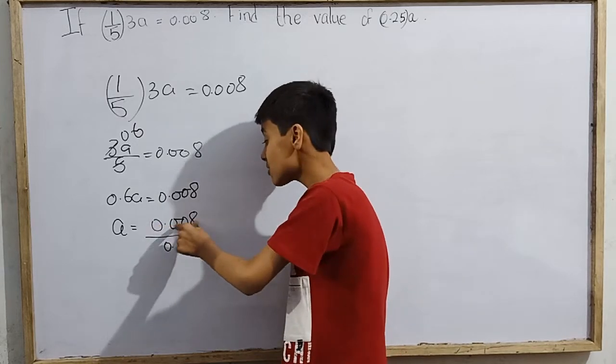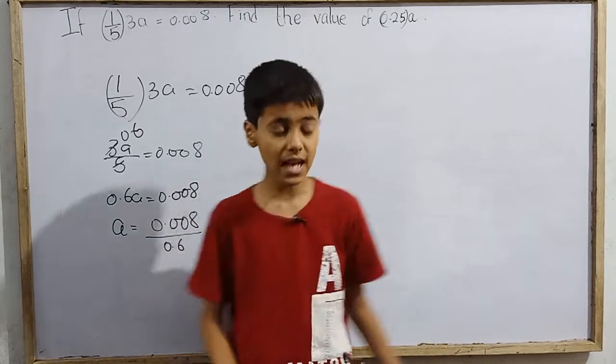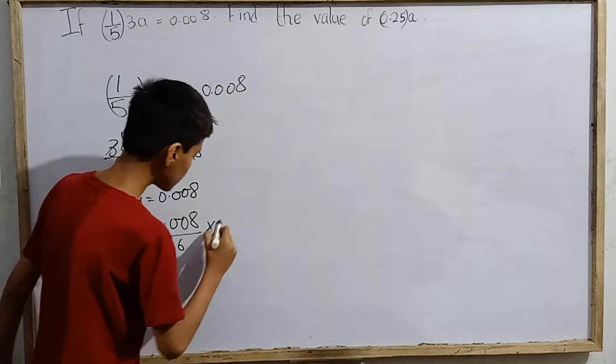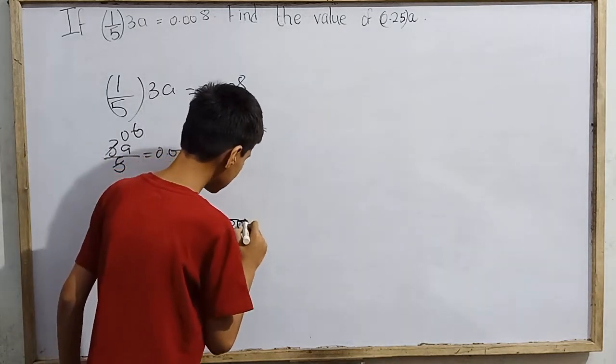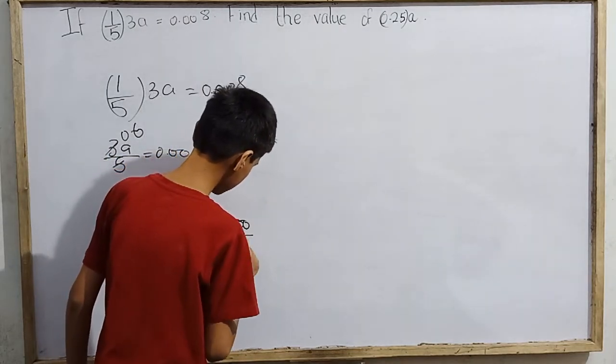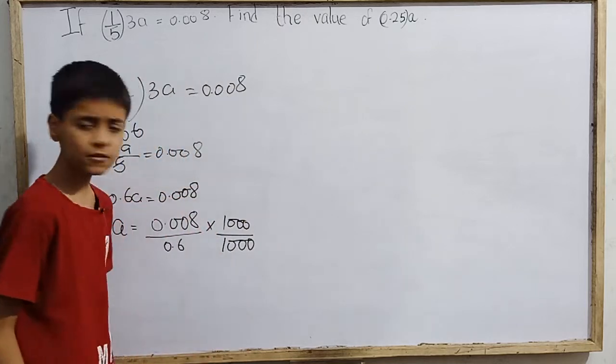Better than to divide 0.008 by 0.6, what will we do? Multiplying both sides of the equation by 1000 and 1000. Why do we try that?